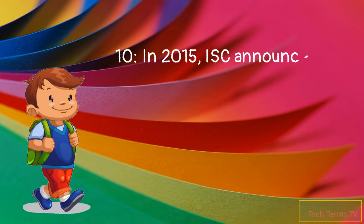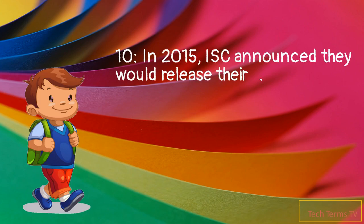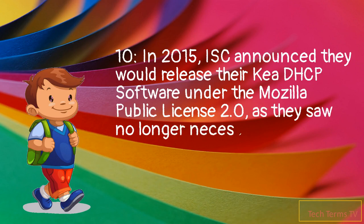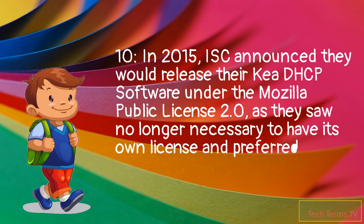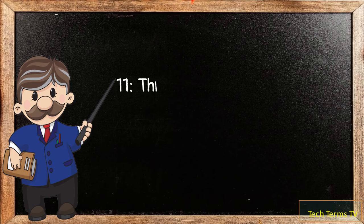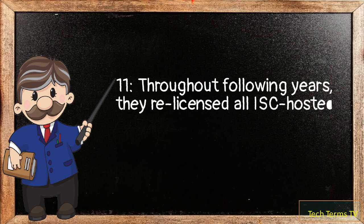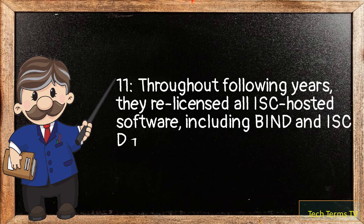In 2015, ISC announced they would release their Kea DHCP software under the Mozilla Public License 2.0, as they saw it no longer necessary to have its own license and preferred a copyleft license. Throughout the following years, they relicensed all ISC-hosted software, including BIND and ISC DHCP server.